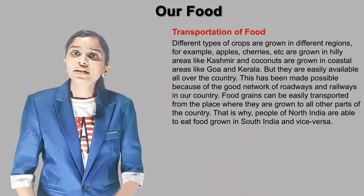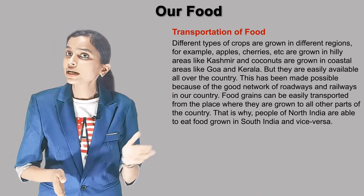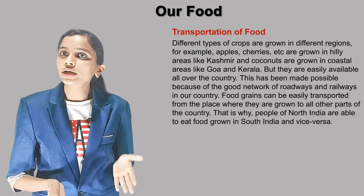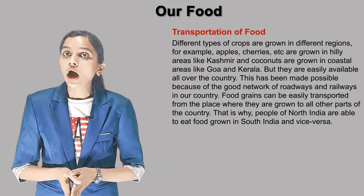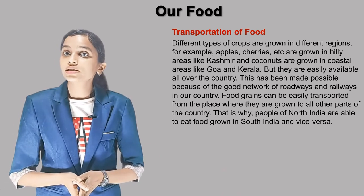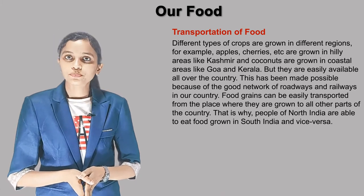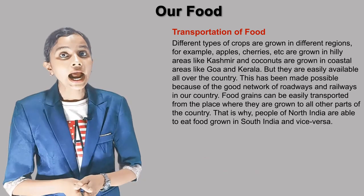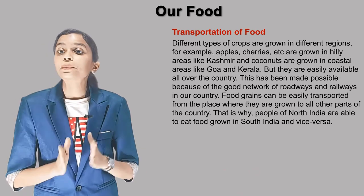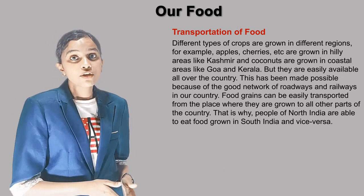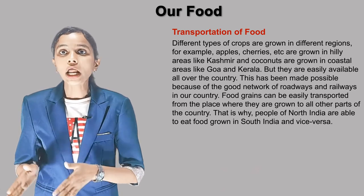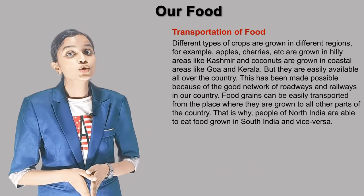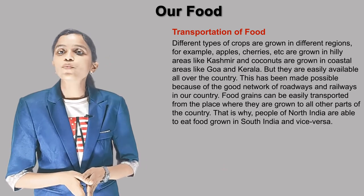Transportation of food: Different types of crops are grown in different regions. For example, apples and cherries are grown in hilly areas like Kashmir, and coconuts are grown in coastal areas like Goa and Kerala. But they are easily available all over the country. This has been made possible because of the good network of roadways and railways in our country. Food grains can be easily transported from where they are grown to all other parts. That is why people of North India are able to eat food grown in South India and vice versa.